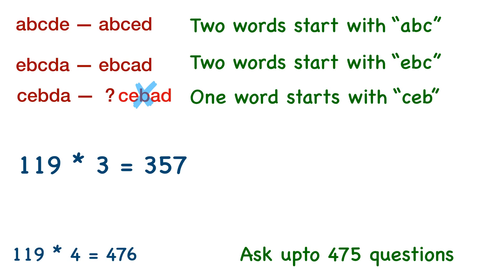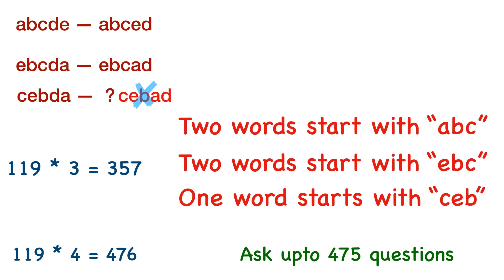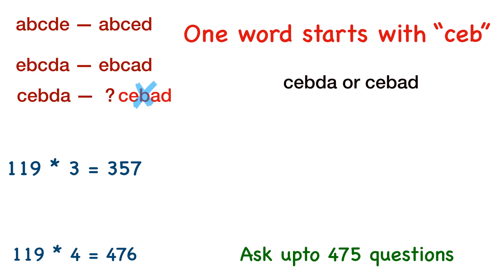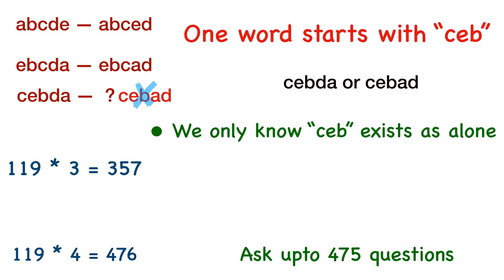What we're going to do is ask the first three characters of each of the 119 permutations — that's 357 questions. Once we do that, we find that two words start with ABC, two start with EBC, and so on, but exactly one word starts with CEB. This tells us that Rachit removed either CEBDA or CEBAD — those are the only two candidates, since CEB is the singleton bucket.